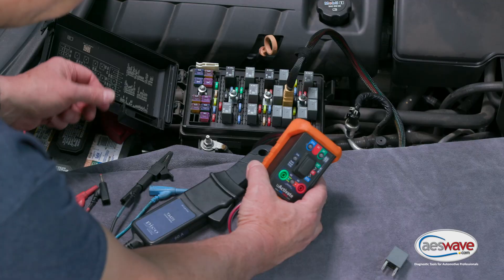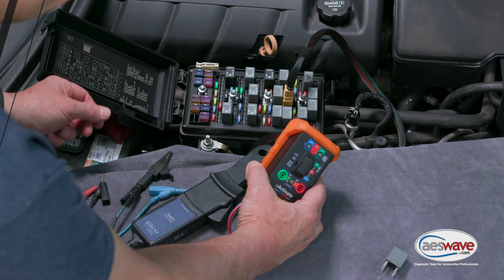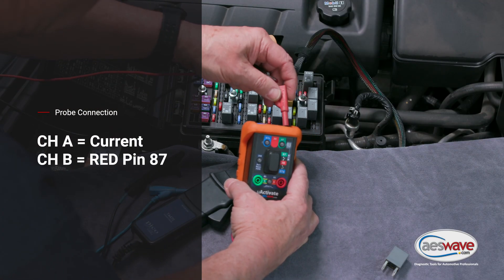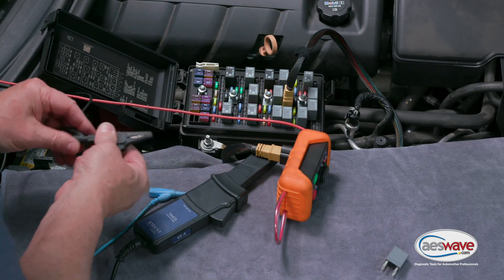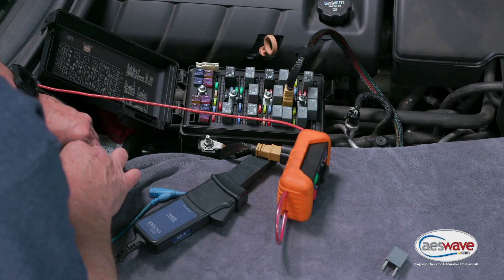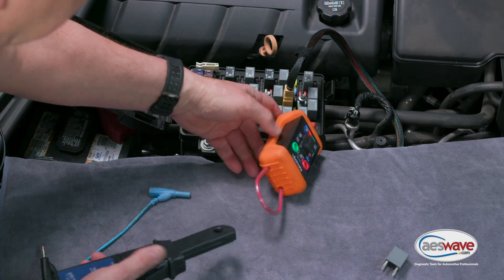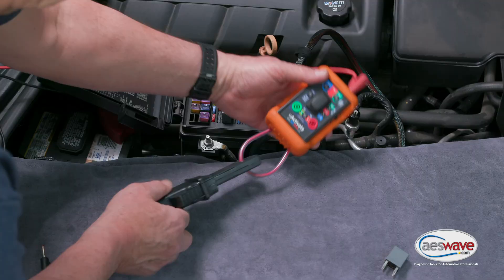So on 87 we're going to go ahead and hook up, and then our ground we're going to hook up to the battery negative. And then our current probe is going to go around our loop.